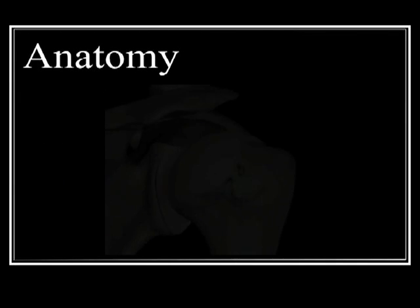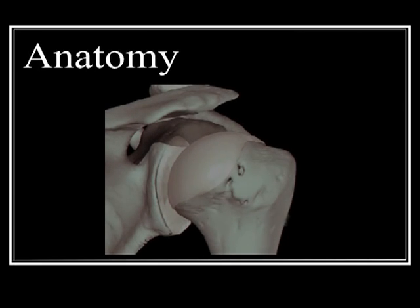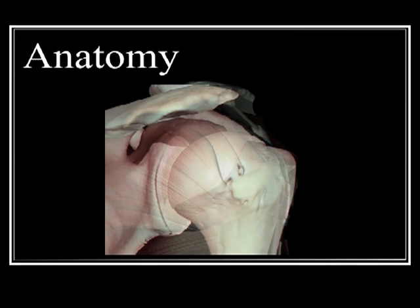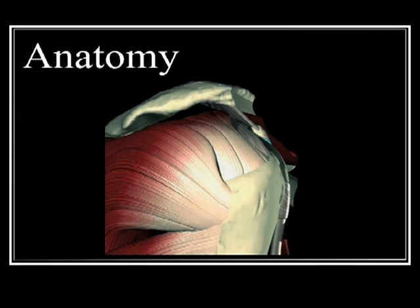The shoulder is a drumstick-shaped bone which articulates with the shoulder blade, or scapula. From the different surfaces on the shoulder blade, a series of muscles originate and then join together to form a cuff of flat tendons. This cuff attaches into the lateral aspect of the shoulder. The top tendon, although the smallest, is both the most important as well as the most commonly injured.